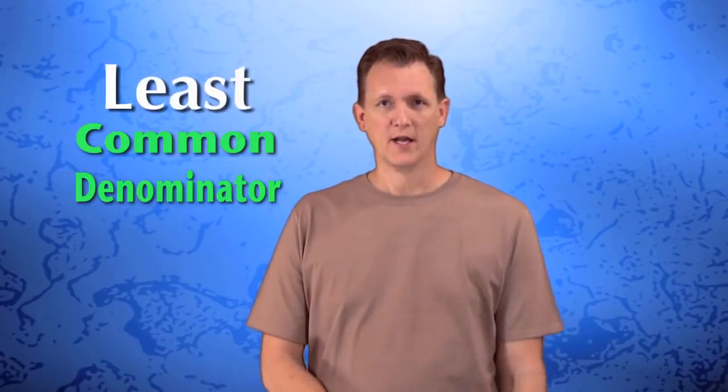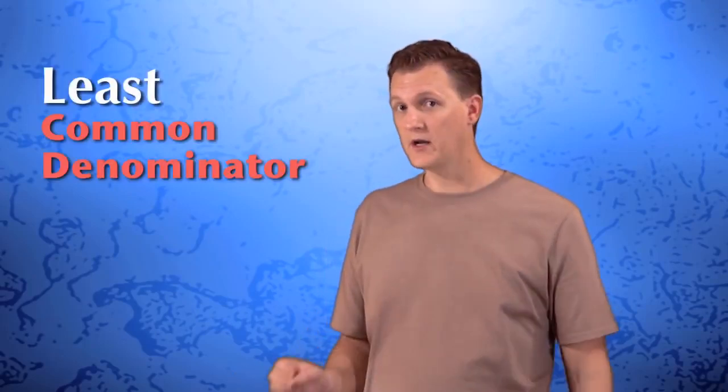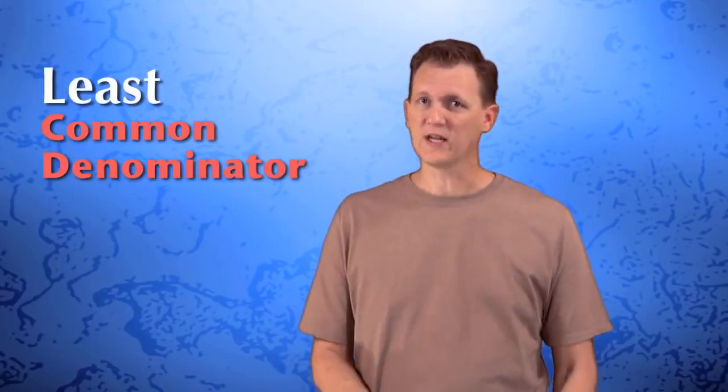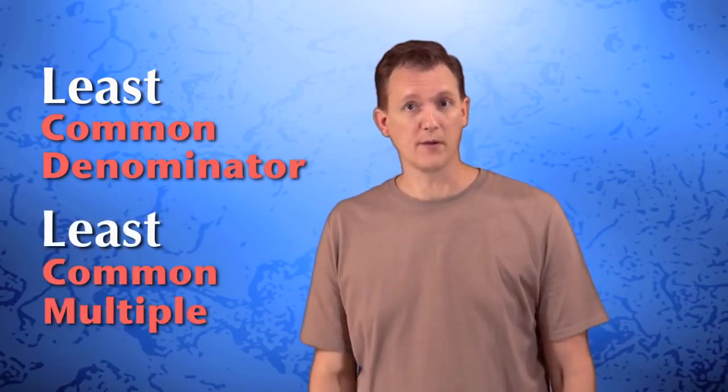This new method is called finding the least common denominator, because it involves using the smallest common denominator we can find instead of just using the product of the bottom numbers like we did in the first method. To find the smallest common denominator of two fractions, we need to figure out what the least common multiple of the two bottom numbers is.